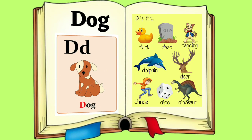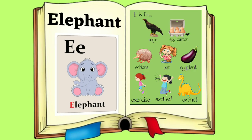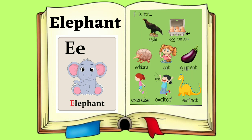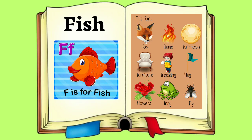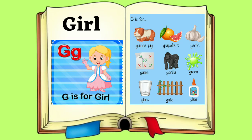Cat. D for Dog. D, D. Dog. E for Elephant. E, E. Elephant. F for Fish. F, F.